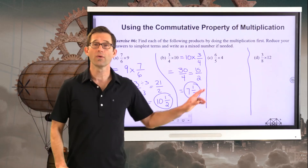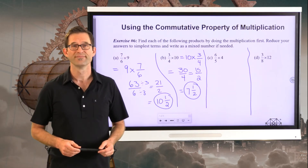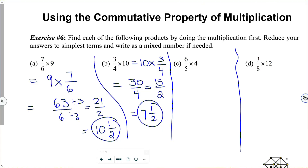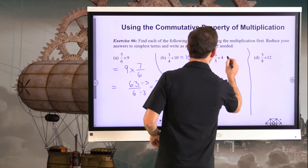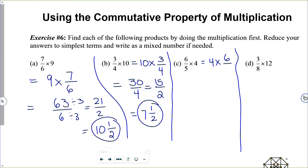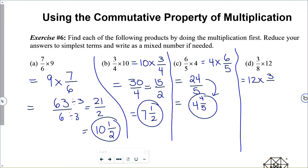Pause the video and take a shot at letter c and letter d. Six-fifths times four is the same as four times six-fifths. Four times six is twenty-four, so it's twenty-four-fifths. Five goes into twenty-four four times with a remainder of four — giving four and four-fifths. Three-eighths times twelve is the same as twelve times three-eighths. Twelve times three is thirty-six-eighths. Dividing by four gives nine-halves — nine divided by two is four and one-half.